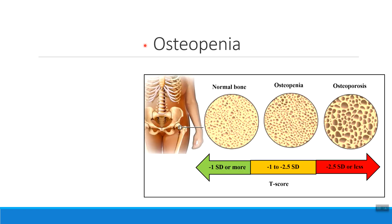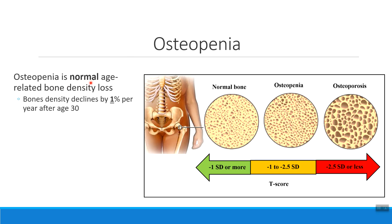The first disorder we're going to talk about is called osteopenia. Osteopenia is the normal age-related loss in bone density that occurs with aging. In every person, starting around age 30, bone density begins to decline by about one percent every year. This is just a natural part of the aging process.